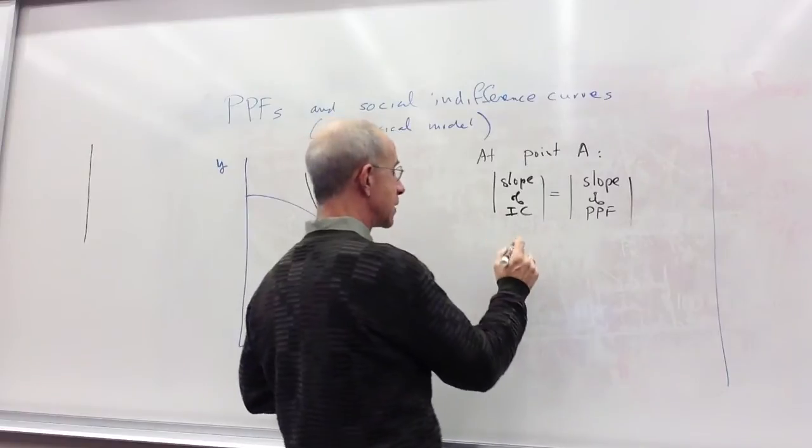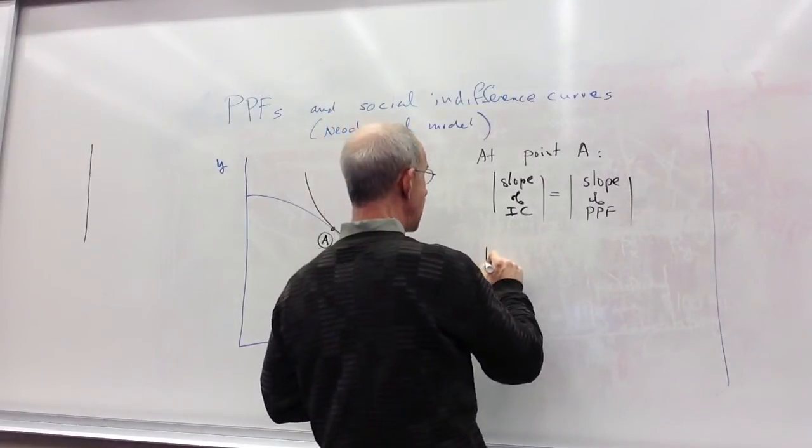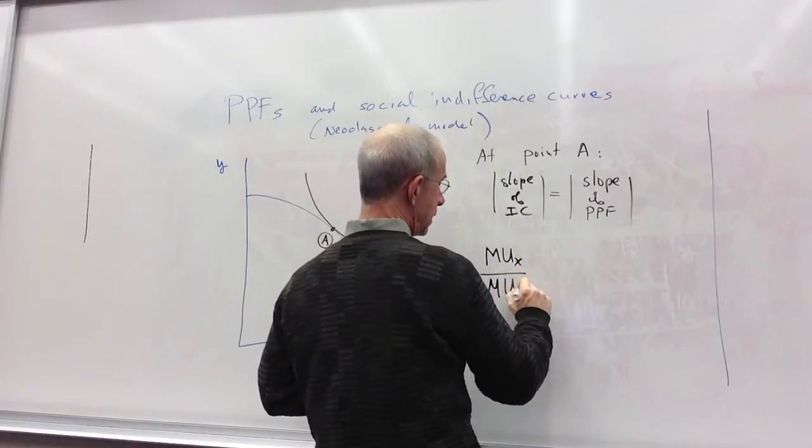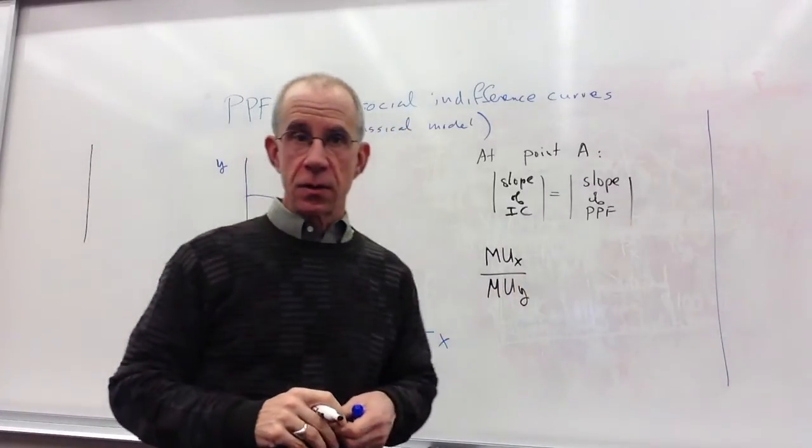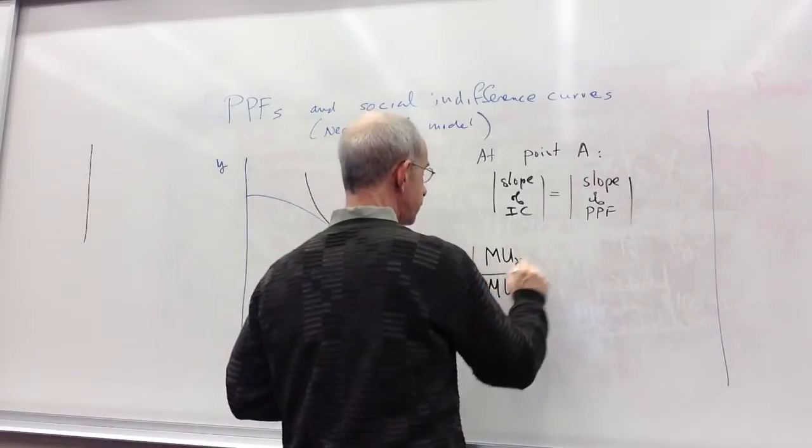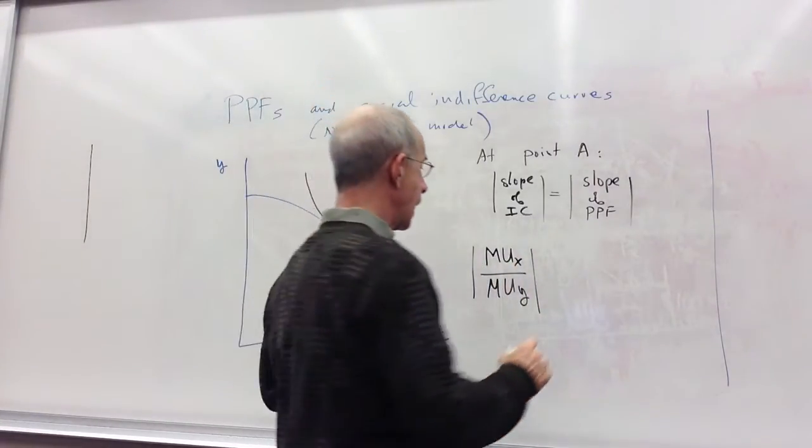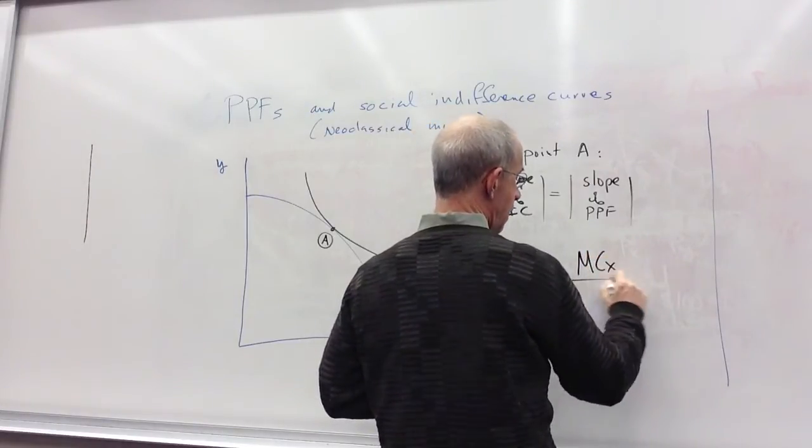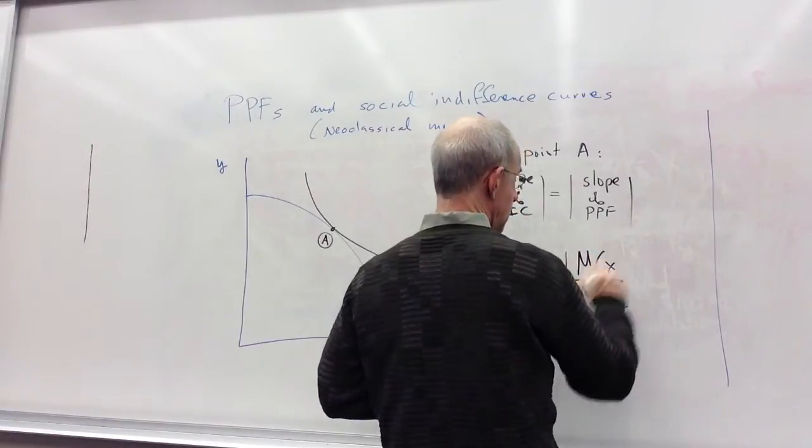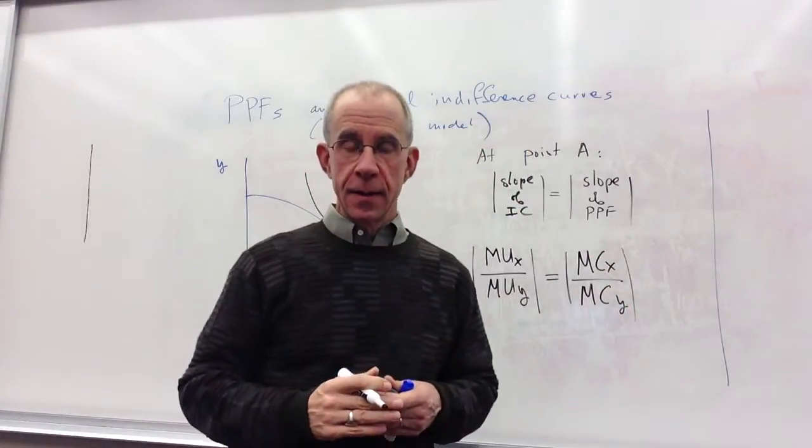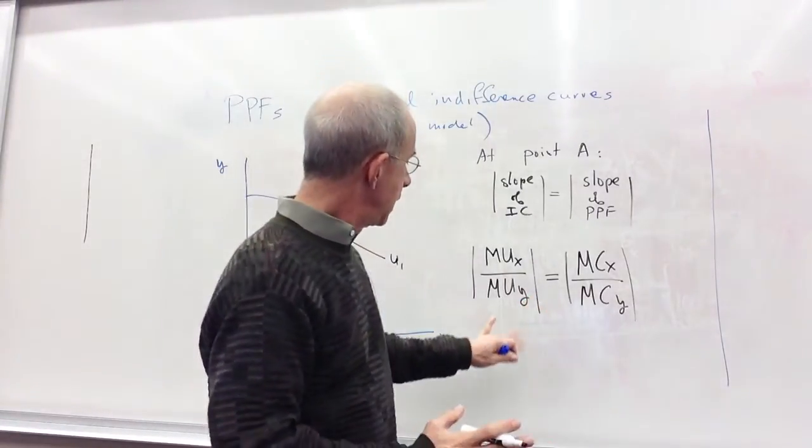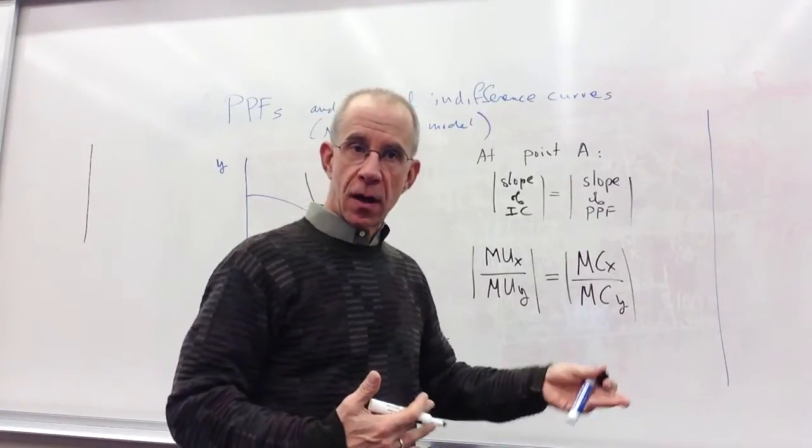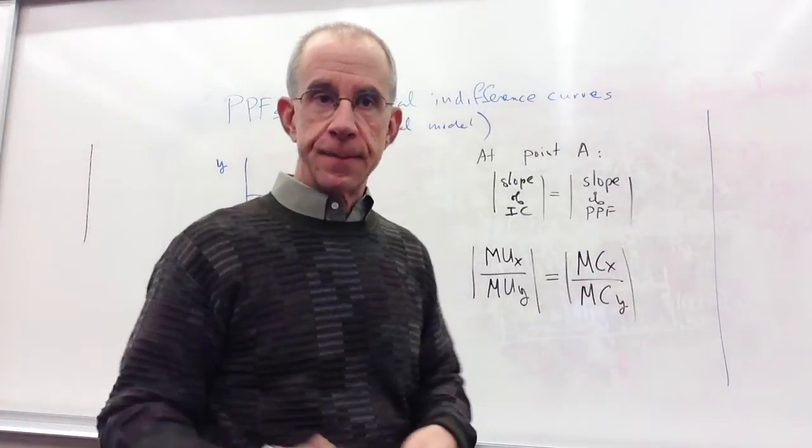So we have the slope of the indifference curve, as I've talked about before, can be thought of as the marginal utility of X compared to the marginal utility of Y. So what you have here is that the tradeoff in utility of consumers is just equal to the tradeoffs in production costs on the output side.